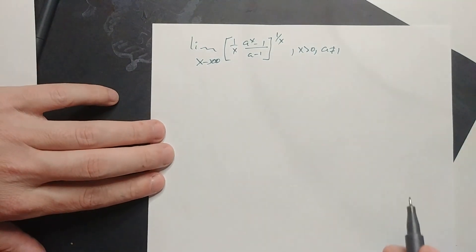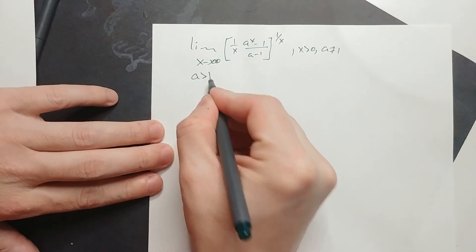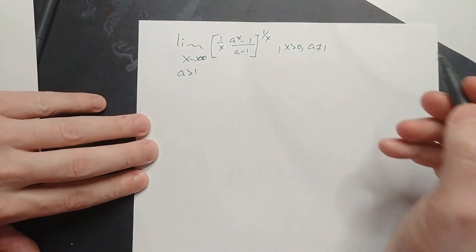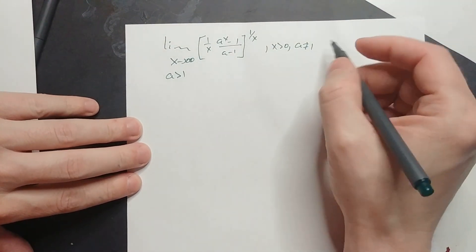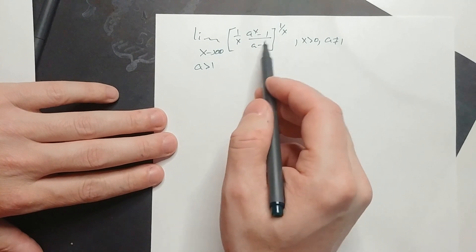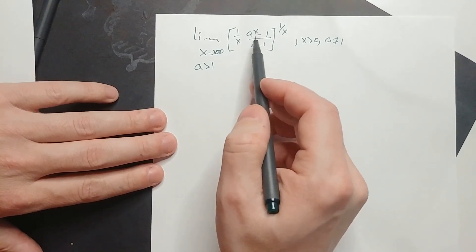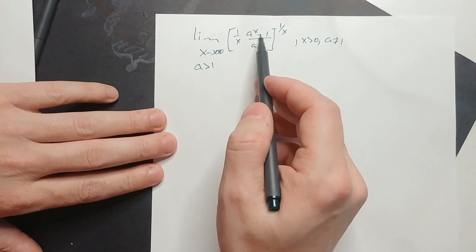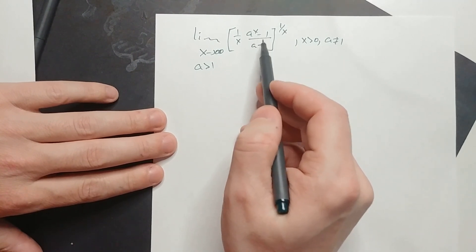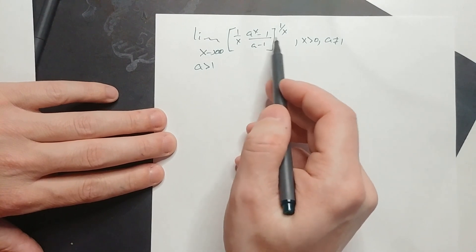I'm going to solve this for the case when a is greater than 1. You should also, on your own as an exercise, consider the case where a is between 0 and 1. We have a variable base and a variable exponent — each x changes the base value and the exponent value. So: variable base, variable exponent.